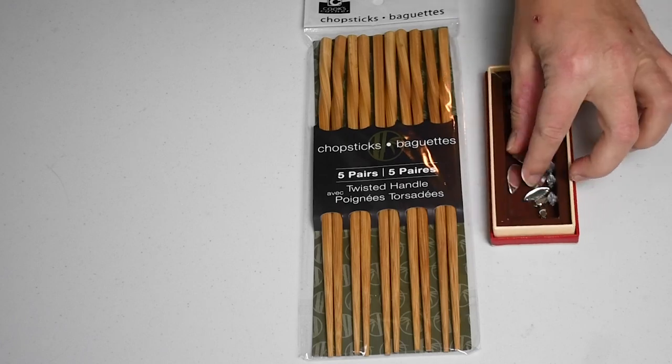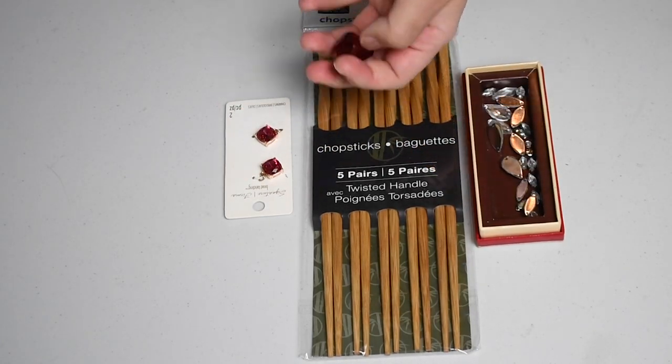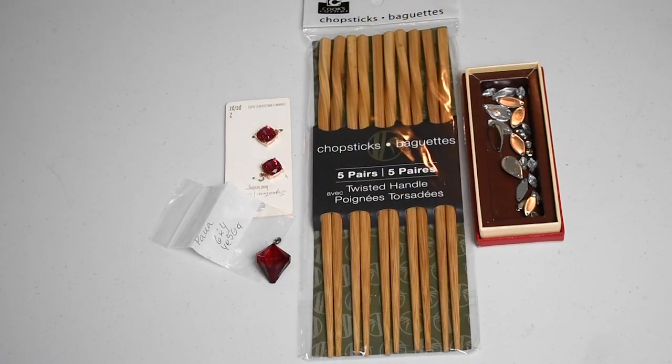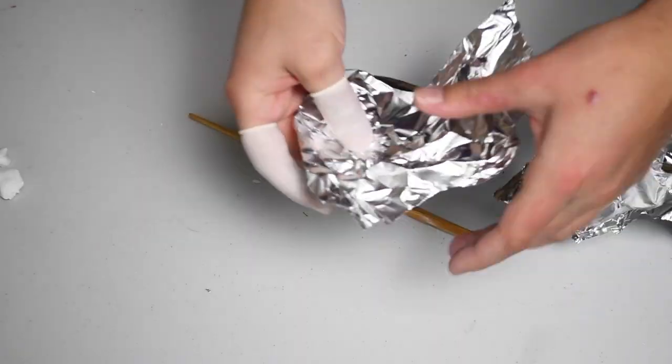So for today's craft you will need chopsticks. I got these from Marshalls for about three bucks and some other jewels and elements that you might want to use. I ended up going with the pink gems. I got those from Michaels but kind of anything that your heart desires will work.